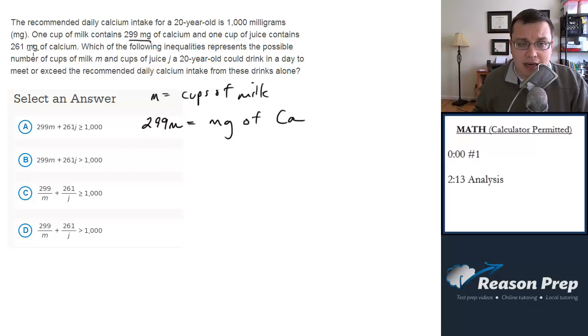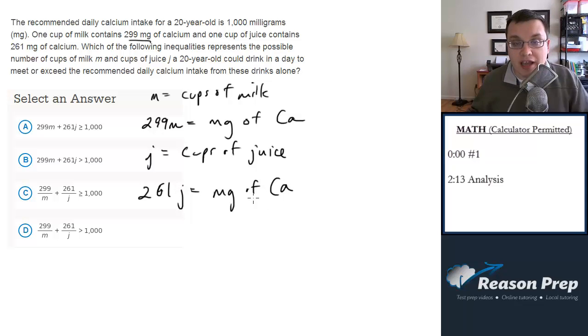And then cups of juice each contain 261 mg, so J is the number of cups of juice. So the mg of calcium from this is going to be 261 times J. So if you drink M cups of milk and J cups of juice, how many mg of calcium will you be consuming?